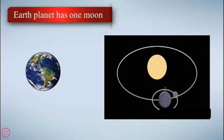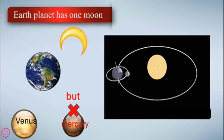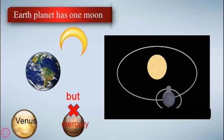Earth planet has one moon. We have one moon. The other planets, not all the planets, have moons. We have a moon, but Mercury or Venus, they have no moon, but Earth has a moon.